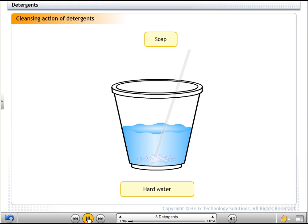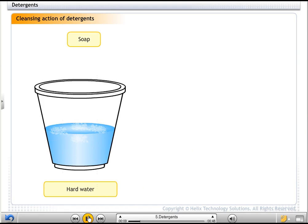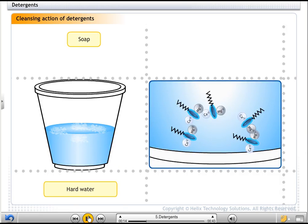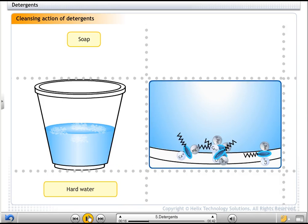Sometimes soaps don't lather well. This normally happens when the water in which the soap is dissolved is hard. Hard water contains calcium and magnesium which combine with soap molecules to form insoluble precipitates.